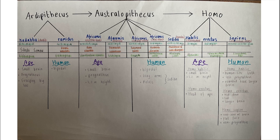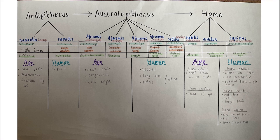Shout out to Jessica for making this diagram. It shows the different types of species that were discovered, where they were discovered, who discovered them, how old they are estimated to be, which species group they fall into, and what ape-like and human-like characteristics they have.